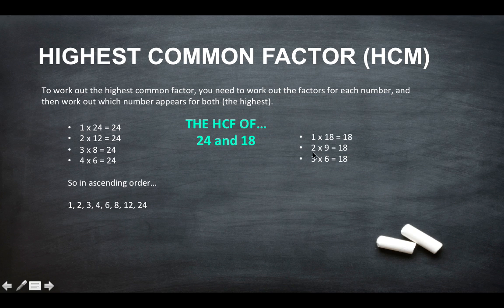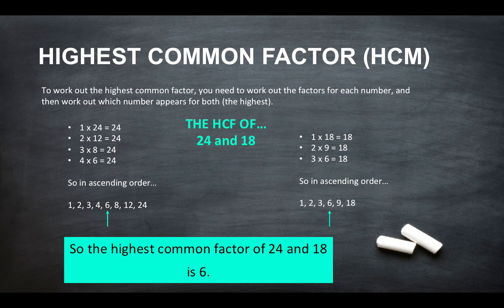And for 18 we've got 1, 2, 3, 6, 9 and 18. So you need to find the highest common factor. As you can see 6 occurs in both sets of numbers and it's the highest common factor that both of these numbers share. So the highest common factor of 24 and 18 is 6.